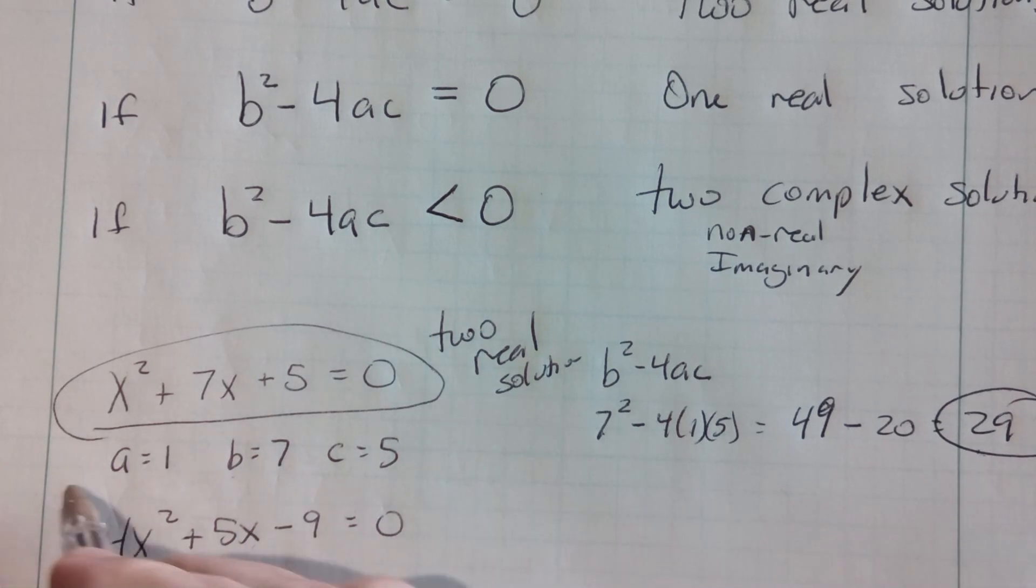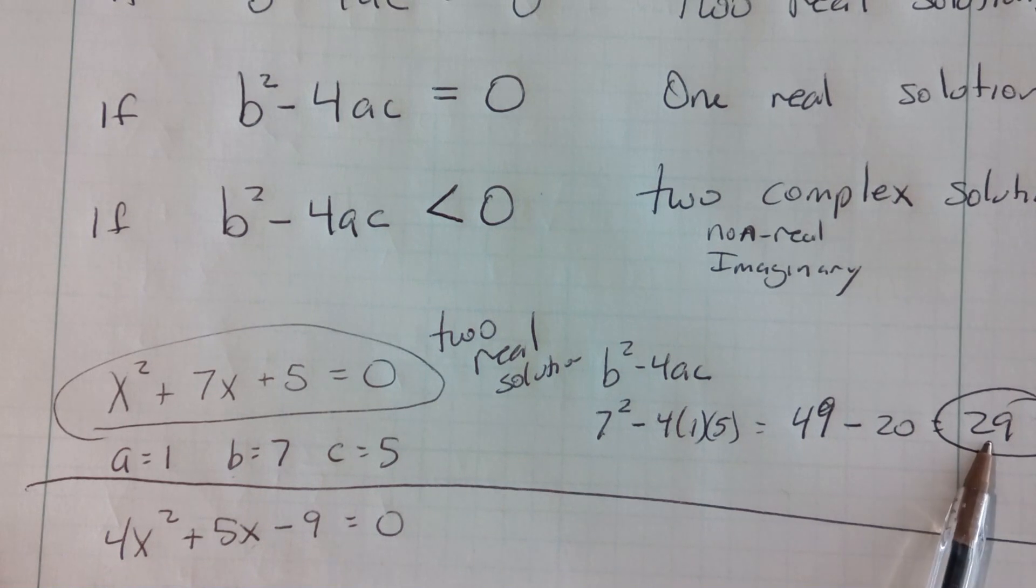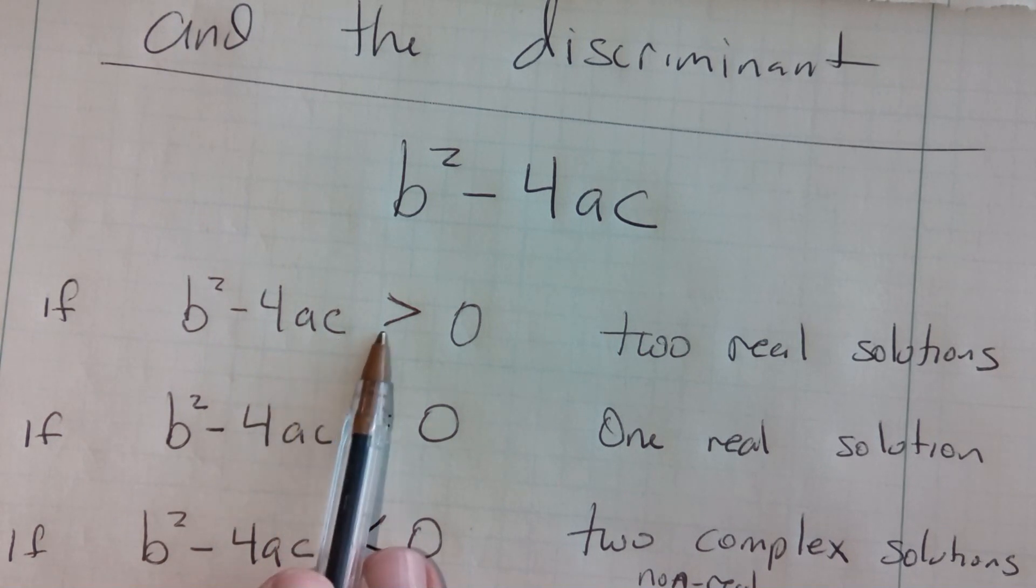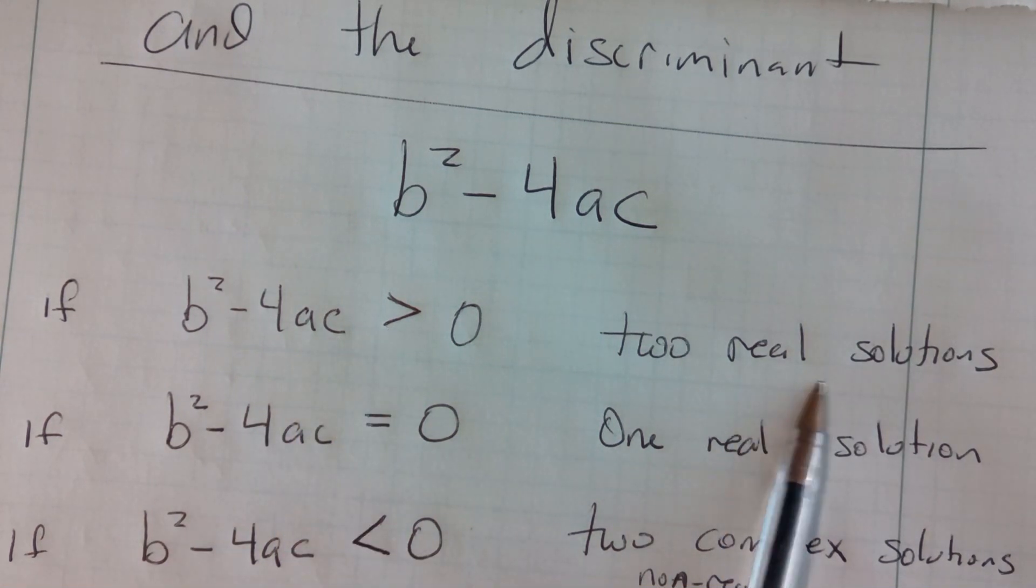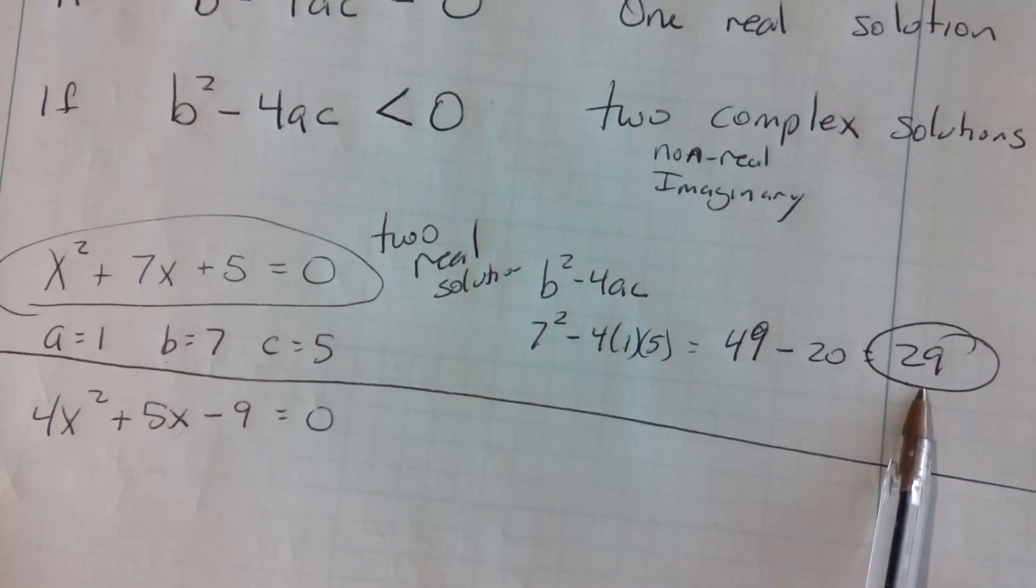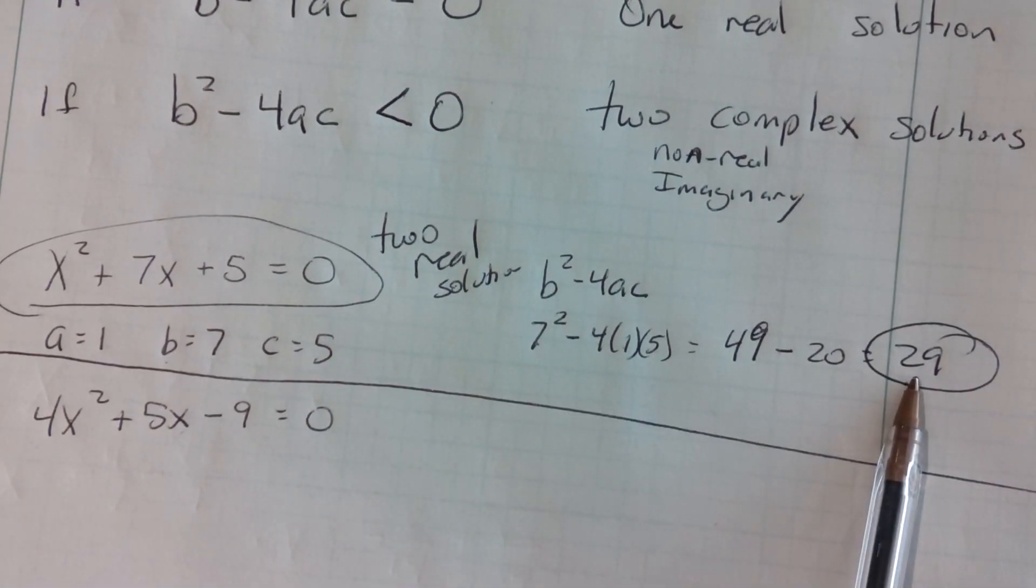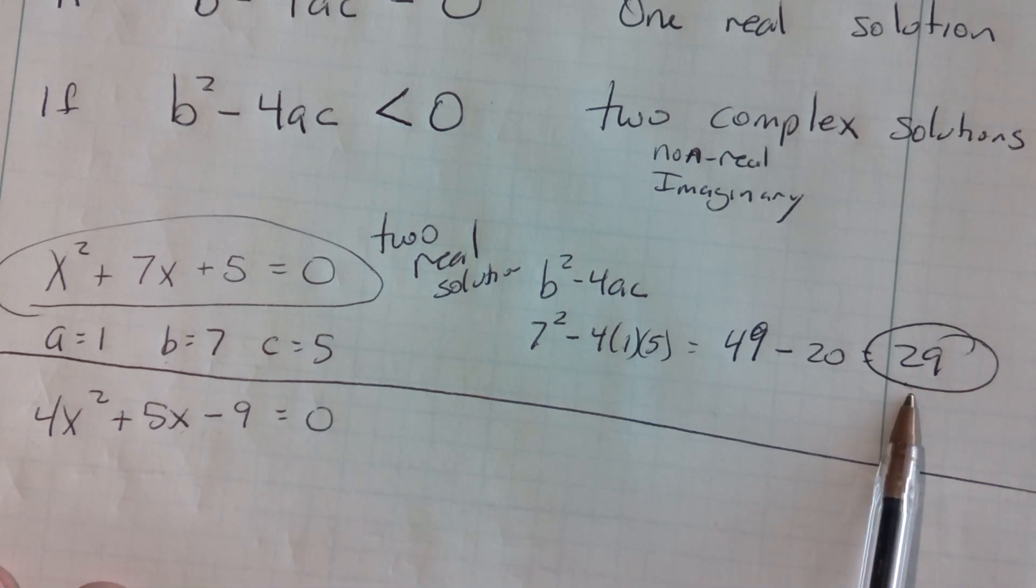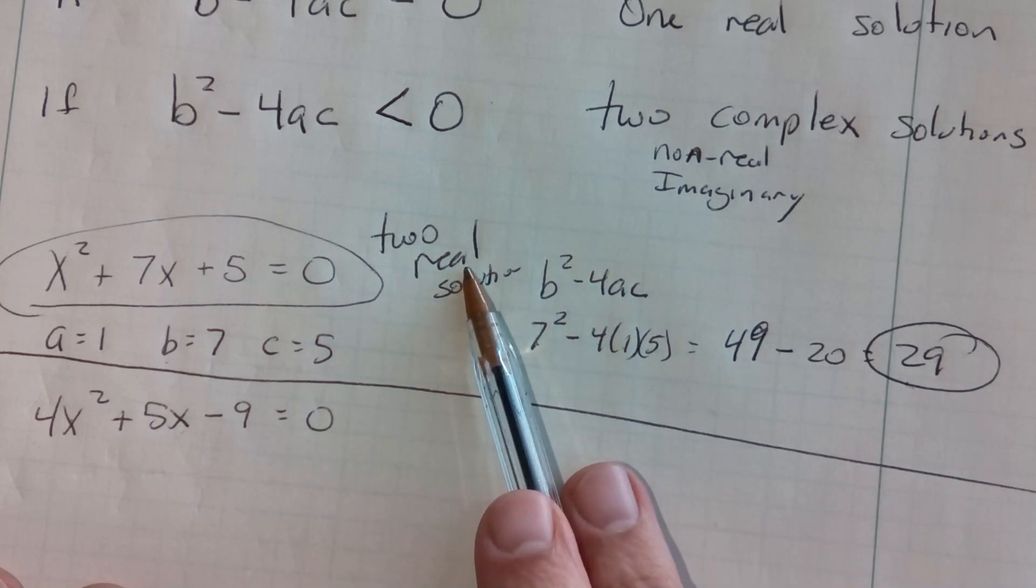Now, some mathematicians even go further. If this b-squared minus 4ac happens to be positive and a perfect square, they would actually say it is two real rational solutions. Because if I can square root this number, if I can square root 29 as a nice integer, then it would give me two rational roots. But since 29 is not a perfect square, I get two irrational real roots. I'm not necessarily concerned about you remembering that today, but just realize that some math teachers would like you to even say not that they're just two real roots, but they're two real rational roots.